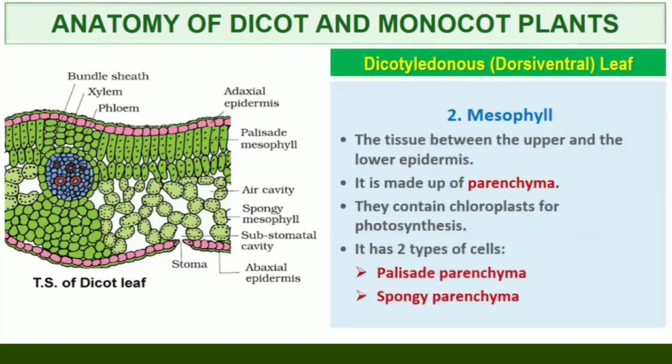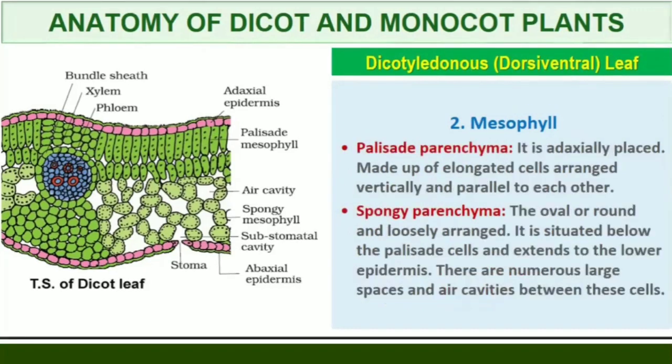The tissue between the upper and lower epidermis is called the mesophyll, which possesses chloroplasts and carries out photosynthesis. It has two types of cells: the palisade parenchyma and the spongy parenchyma. The adaxially placed palisade parenchyma is made up of elongated cells arranged vertically and parallel to each other. The oval or round and loosely arranged spongy parenchyma is situated below the palisade cells and extends to the lower epidermis. There are numerous large spaces and air cavities between these cells.